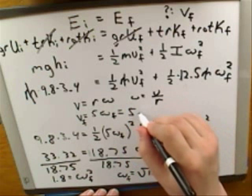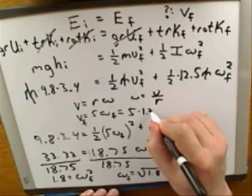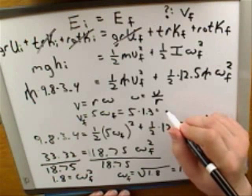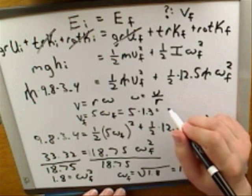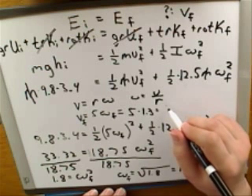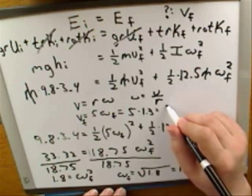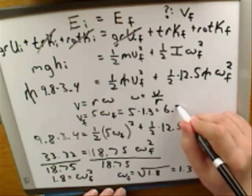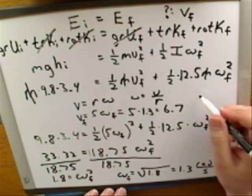All right. So that would be 5 times 1.3. And what do we get for that? 6.66 meters per second. Okay. You're rounding off a little less than me. Okay. That's fine. So that comes out to be about 6.7 or 6.67. Something like that. Depending on how much you round off. Good.